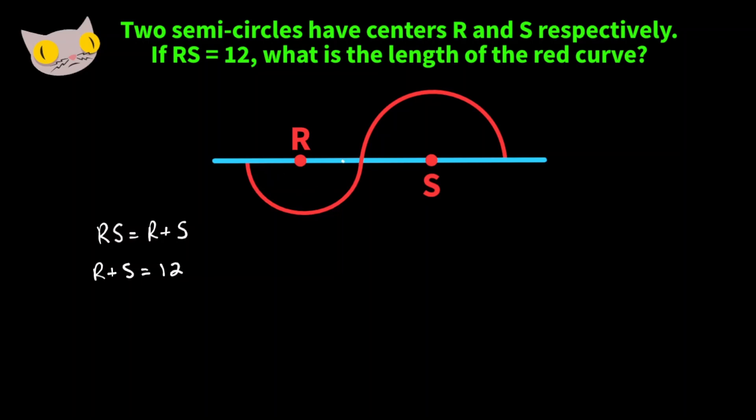The length of the red curve is going to equal the length of the semicircular arc of radius R plus the length of the semicircular arc of radius S.